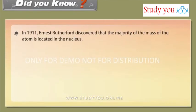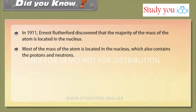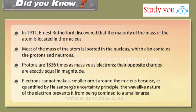Did you know, in 1911, Ernest Rutherford discovered that the majority of the mass of the atom is located in the nucleus. Most of the mass of the atom is located in the nucleus which also contains the protons and neutrons. Protons are 1836 times as massive as electrons. Their opposite charges are exactly equal in magnitude. Electrons cannot make a smaller orbit around the nucleus because as quantified by Heisenberg's uncertainty principle, the wave-like nature of the electron prevents it from being confined to a smaller area.